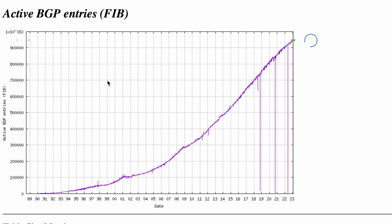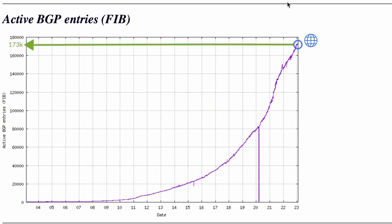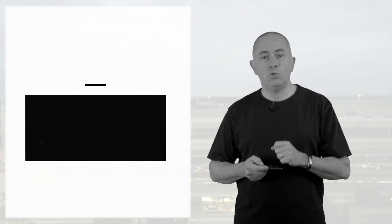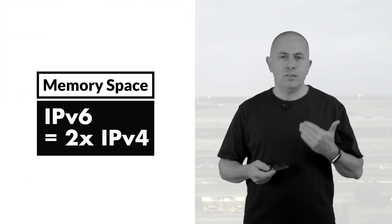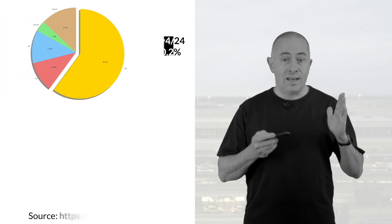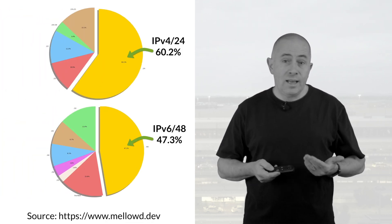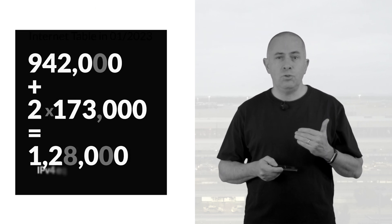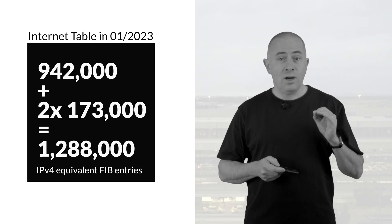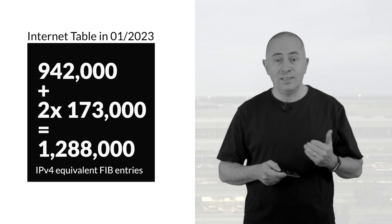In early 2023, if a router contains a full internet table — and that's the case for multiple roles like peering — we have to install in hardware more than 942,000 IPv4 and 173,000 IPv6 routes. It's a large quantity of prefixes. A rough approximation leads to the idea that an IPv6 route occupies twice the space of an IPv4 one, simply because the vast majority of the public table is made of /24s for IPv4 and /48s for IPv6. With this logic, the internet uses 1.3 million FIB entries.